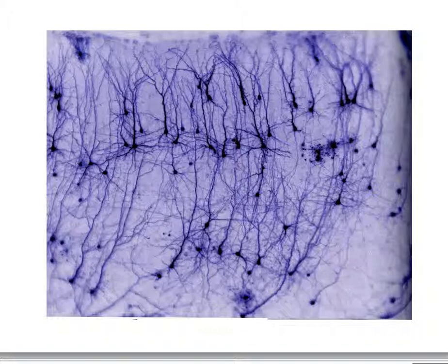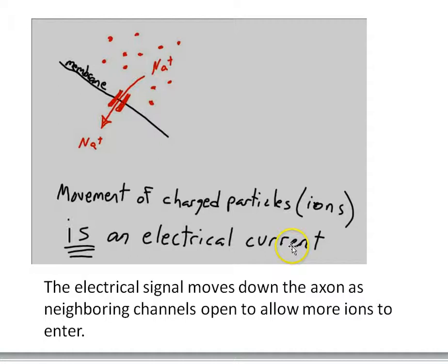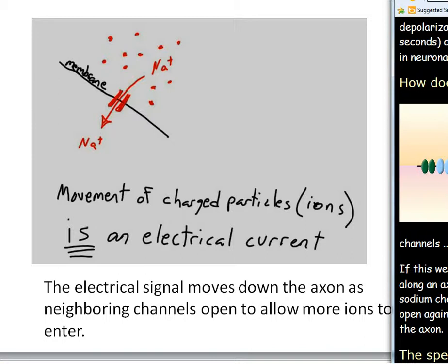How does a neuron generate an electrical signal and carry an electrical impulse down the axon? The basic idea is that in the membrane of the axon are protein channels — ion channels. When they open up, charged particles such as sodium, potassium, chloride, and calcium ions move across the membrane. That movement of charged particles is an electrical current. To understand how the disturbance travels down the axon, we have to look at the arrangement of these ion channels along the axon.